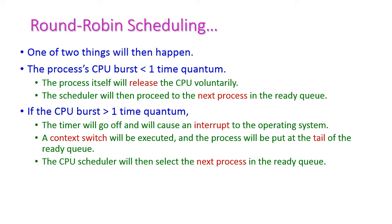In the round robin scheduling algorithm, one of two things will happen. The first condition: the process CPU burst time is less than the time quantum. Then the process itself will release from the CPU voluntarily, because it will complete its execution before the time quantum expires. It releases itself from the CPU, and the round robin scheduler will select the next process from the ready queue to execute.